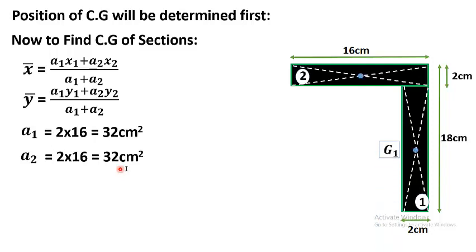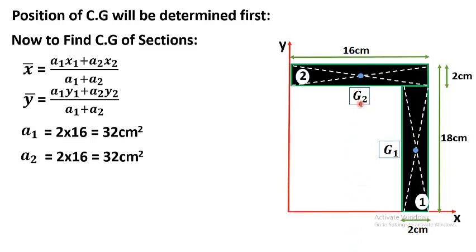The centroid of figure 1 is called G1 and the centroid of figure 2 is G2. The centroid of a rectangle is found by bisecting both dimensions; their intersection point is the centroid. For a reference, we draw the x-axis and y-axis. The question asks for moment of inertia about the centroidal axis, so these are just reference axes.